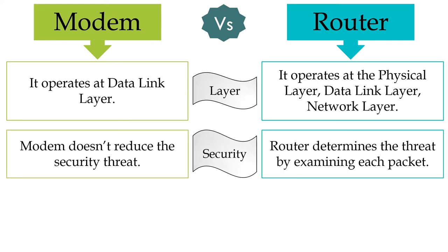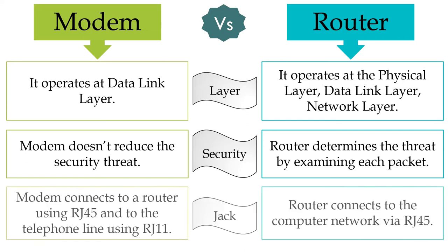A modem does not examine any data packet, so there is always a threat that can enter your computer. Whereas a router examines every data packet before forwarding it. Hence, the implemented firewall in the router will lessen the threat to your computer. A modem connects to a router via RJ45 and to a telephone line via RJ11. A router connects to your computer via RJ45.